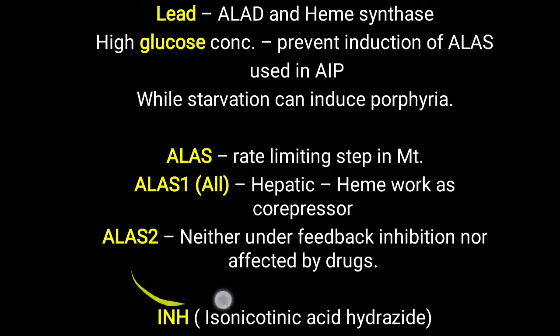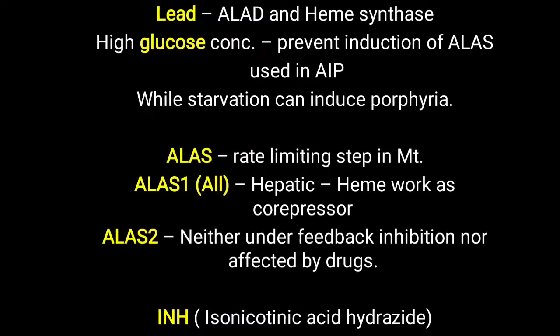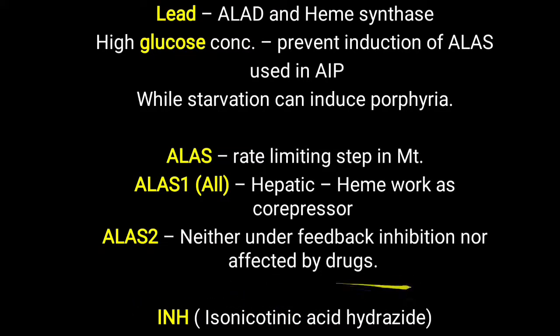INH indirectly affects heme synthesis. INH acts as a competitive inhibitor of vitamin B6, that is pyridoxal phosphate, which is an important coenzyme of ALA synthase. If INH is given, pyridoxal phosphate levels decrease, ALA synthase activity decreases, and this can also lead to anemia.